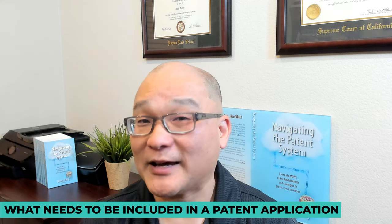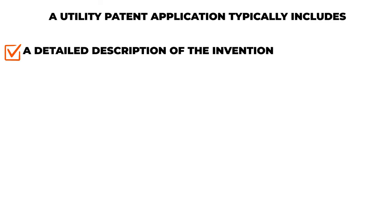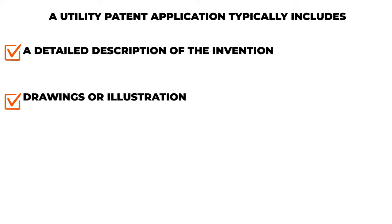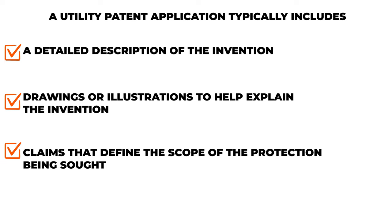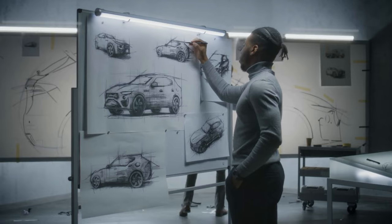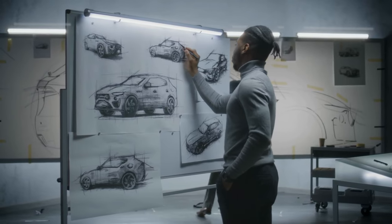Next, let's talk about what needs to be included in a patent application. A utility patent application typically includes a detailed description of the invention, including how it works. It also includes drawings and illustrations to help explain the invention, a written description that explains the drawings, and claims that define the scope of the protection being sought. For a design patent application, a set of drawings which shows how the product looks is submitted.